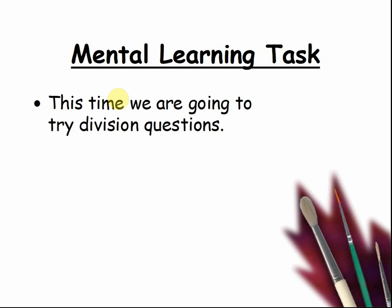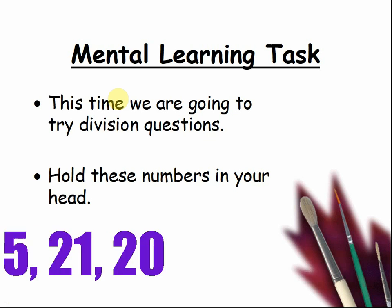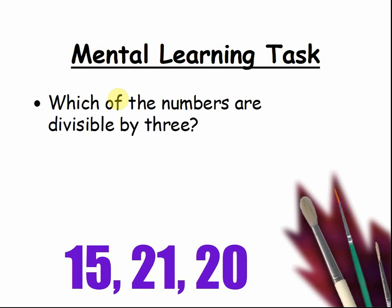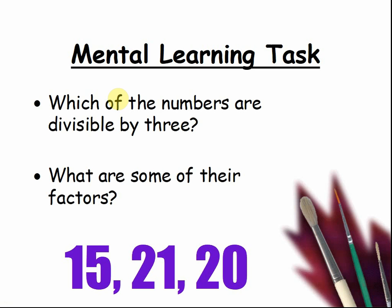This time we're going to try division questions again. Hold these numbers in your head: fifteen, twenty, one, and twenty. Which of the numbers are divisible by three? Pause the video and tell your teacher. What are some of their factors? Factors, if you remember, mean things like three times seven is twenty-one — so what numbers multiply together to make these numbers? Pause the video and tell your teacher.